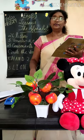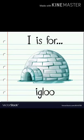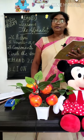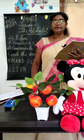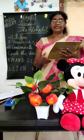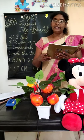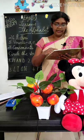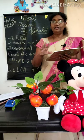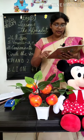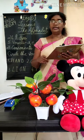Next one is IGLOO. What is an igloo? Igloo is a snow house. The beginning letter I is a vowel sound. I, G, L, O, O — IGLOO.